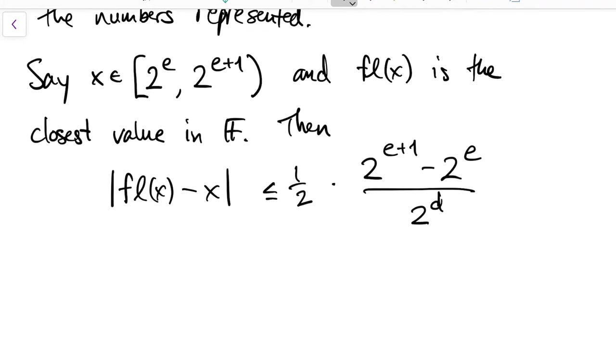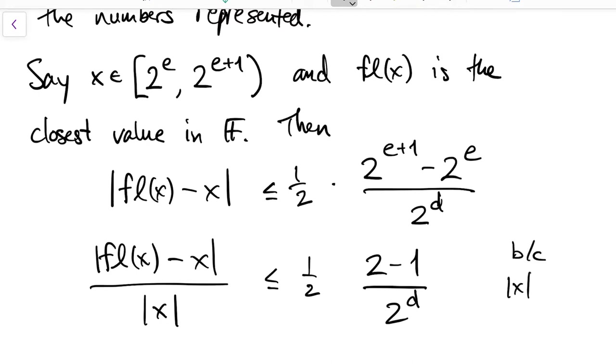So, now if we make this a relative gap, so the size of the gap relative to x itself, then, in fact, we can remove the 2 to the e factor, because we know that x is at least that large, so 1 over x is at least that small.